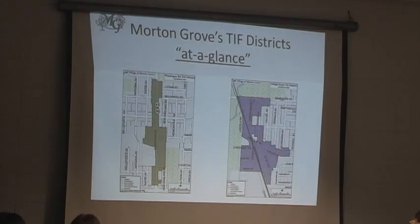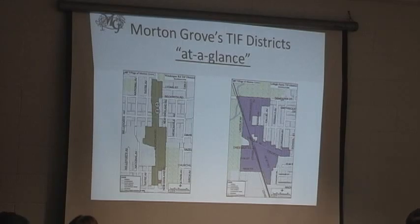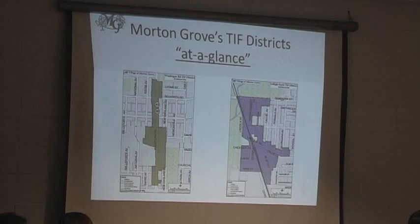Joe may have referred to it before, and we'll talk about it a little bit here tonight as well. The but-for test is a very important aspect — in fact, it's a required aspect of tax increment financing. But for certain conditions being present, but for certain things being available, the TIF would not be available. The TIF would not work. That is required by law.